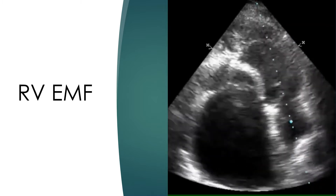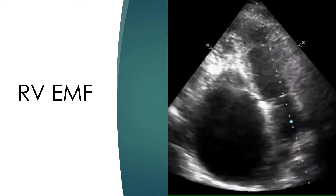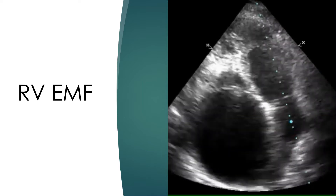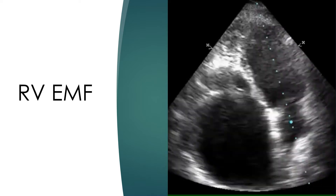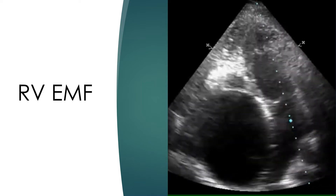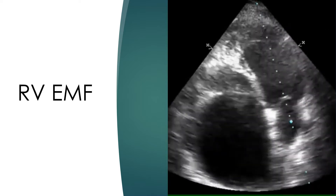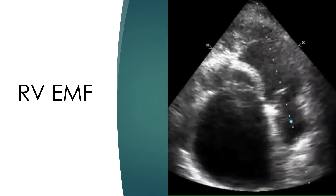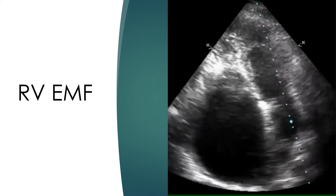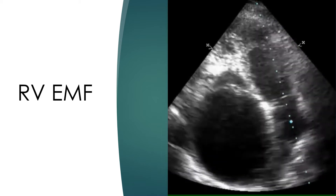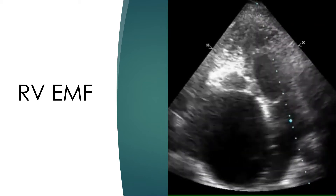The right ventricular cavity is small, seen just distal to the tricuspid valve beyond the right atrium. Dense fibrosis with calcification of the right ventricular cavity and apex is the hallmark of endomyocardial fibrosis. A corresponding dimple will be seen near the apex on the surface.